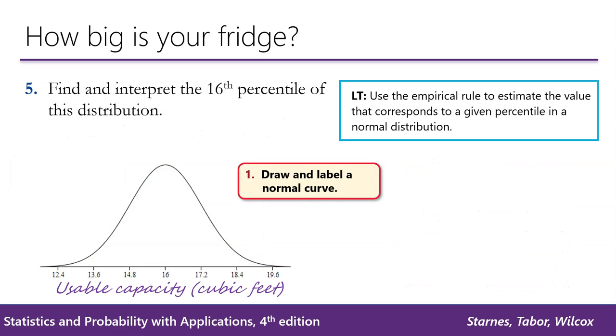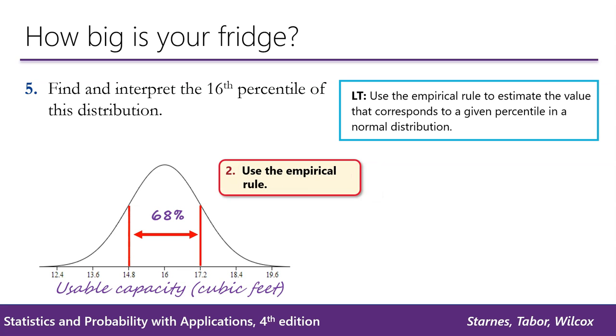Question 5 asks us to find and interpret the 16th percentile of the distribution. So we're going to begin by drawing and labeling that normal curve one more time. And let's use the empirical rule. Remember that 68% of observations fall within one standard deviation of the mean. That means that 16% of observations fall below 14.8 and 16% of observations fall above 17.2.